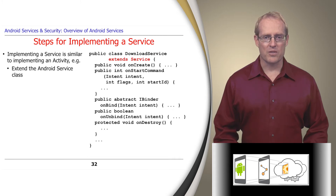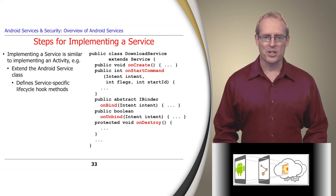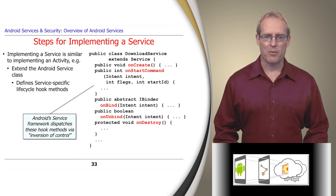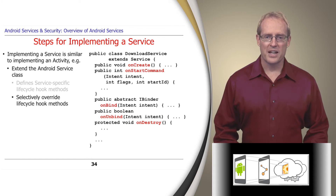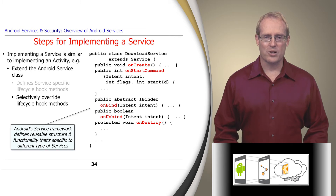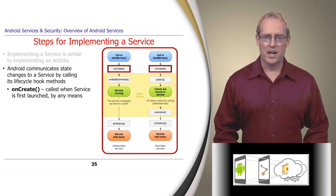The first step in programming a service involves extending the Android service class, which defines a number of service-specific lifecycle hook methods that play the role of primitive operations in the template method pattern. These hook methods are dispatched automatically by Android's service framework via inversion of control, in response to infrastructure and application events associated with changes to a service's lifecycle state. Depending on whether the service is intended to be started or bound, different subsets of these hook methods must be overridden, illustrating how Android's service framework defines reusable structure and functionality specific to different types of services.